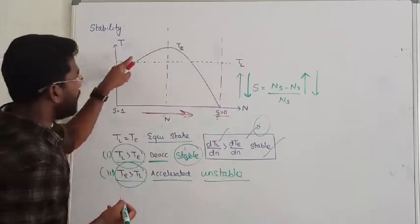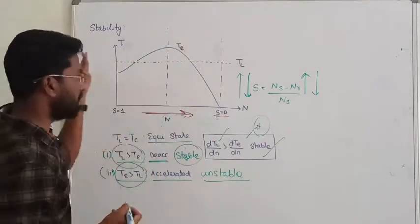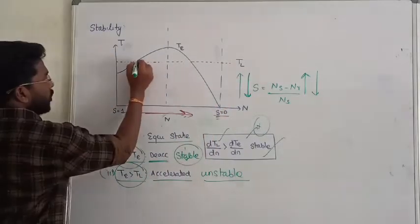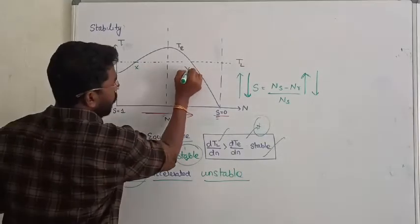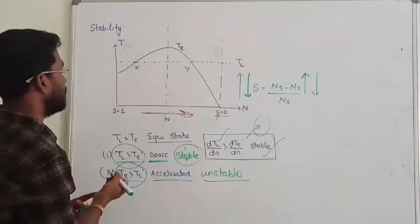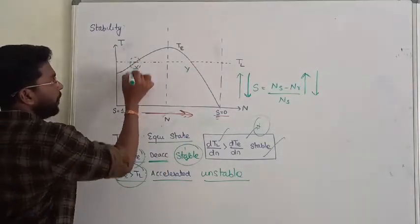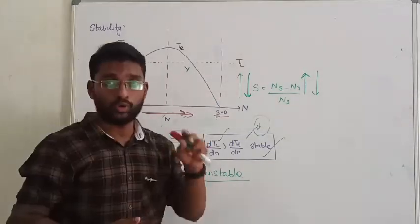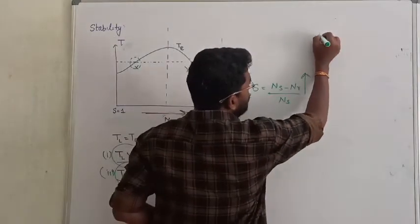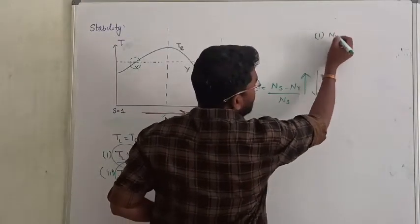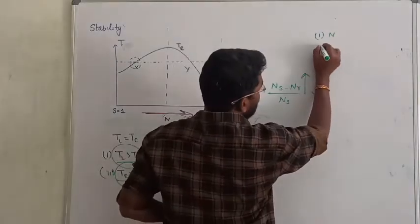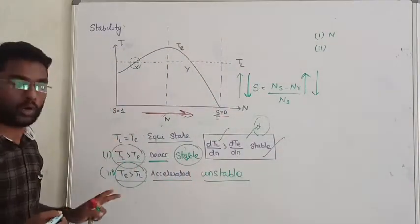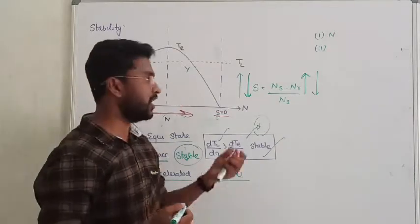Let us assume this is the load torque curve. Now the question is, let me select two points: point A and point Y. I am going to identify each point on the curve and determine whether the system is stable or unstable. You need to do two things: first, observe the direction of speed; second, observe the relation between electromagnetic torque and load torque. From these, we can identify the stability of the system.